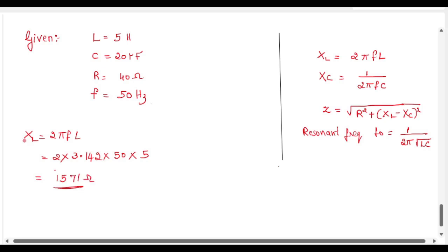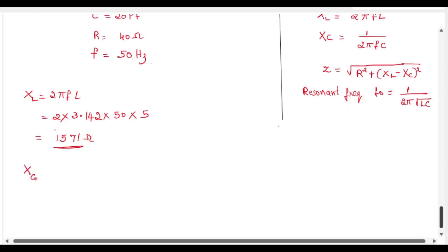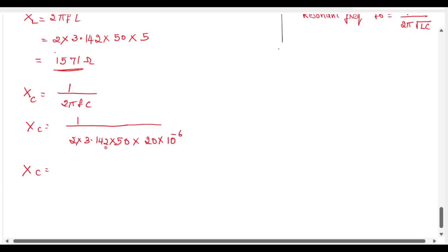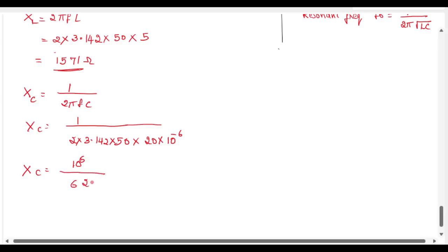Now let us find the value of capacitive reactance XC. XC equal to 1 by 2 pi fC, or XC equal to 1 divided by 2 into 3.142 into frequency 50 into capacitance value 20 microfarad, that is 20 into 10 to the power of minus 6. We can take 10 to the power of minus 6 to the numerator, so it becomes 10 to the power of 6 divided by 6284.